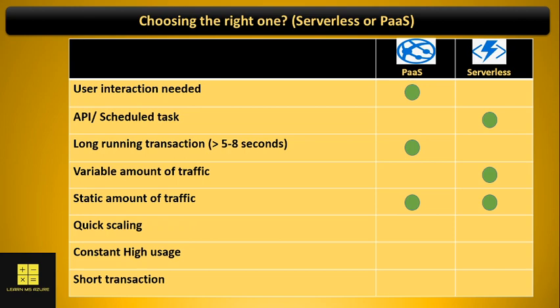If you need quick scaling of your application, you should go for serverless, because you are not actually managing the scaling — serverless handles it automatically. In a case where your application will have constant high usage, you should go for platform as a service. To clarify: the static traffic scenario means we are unsure whether usage is high or low, but if we know it is constantly high, then platform as a service is the choice. And if you have short transactions, you should go for serverless. These scenarios will help you decide whether to choose platform as a service or serverless.